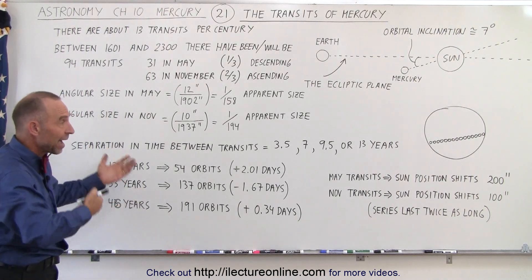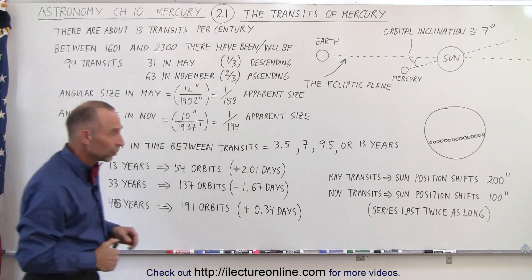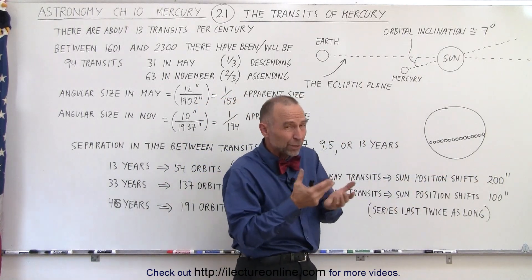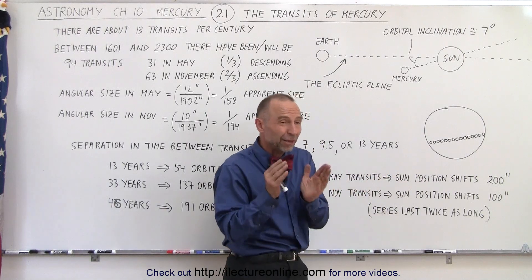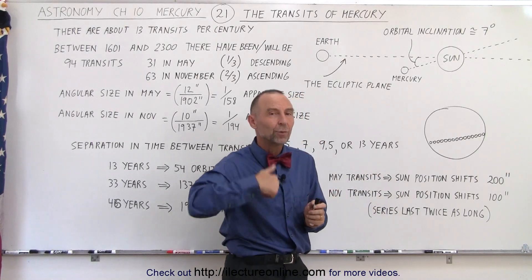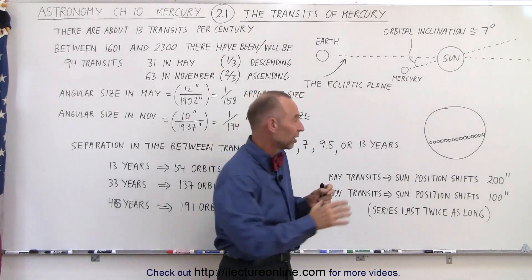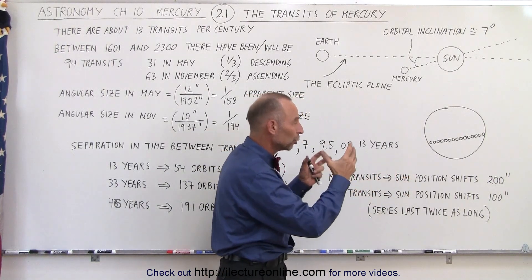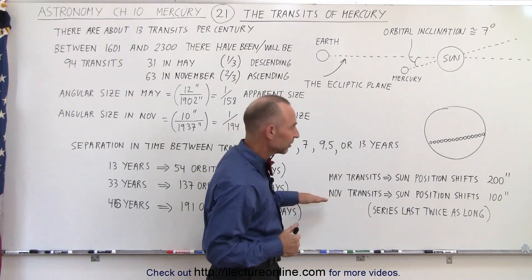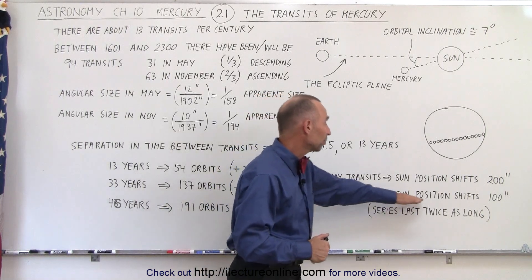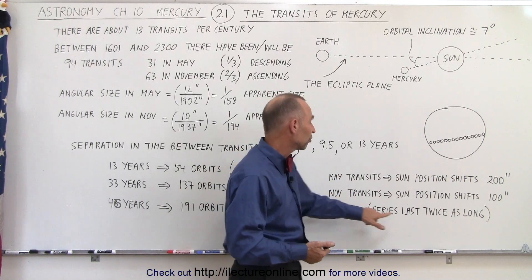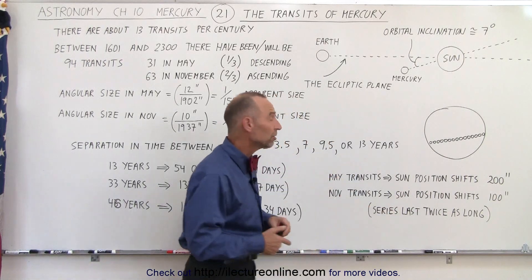Another interesting aspect is that in May transits, the sun's position shifts about 200 arc seconds — roughly three arc minutes — between transits. This means the sun is almost always in the exact same place as it was during the previous May transit, which is why May transits keep repeating for hundreds of years. For November transits, the sun's position shifts only 100 arc seconds — half as much — which means the November transit series lasts twice as long as the May series.